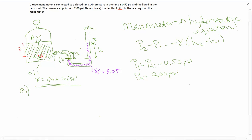We want to find two things: we want to find the depth of the oil, so that's going to be this term Z right here, and then we have to find the reading H on the manometer, which will be right here.